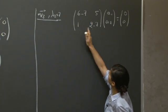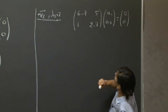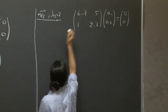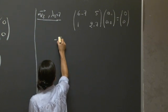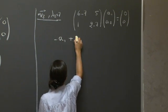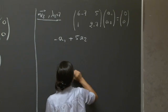And then we have 1 and 2 minus 7, which is minus 5. So really what we have is an equation minus a1 plus 5a2 in both cases.